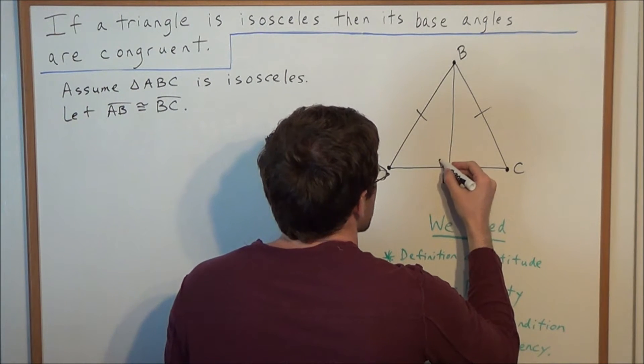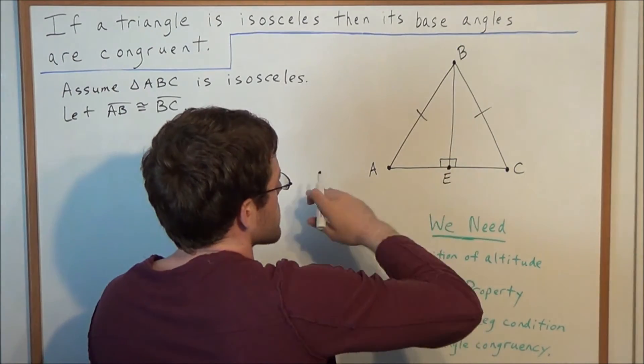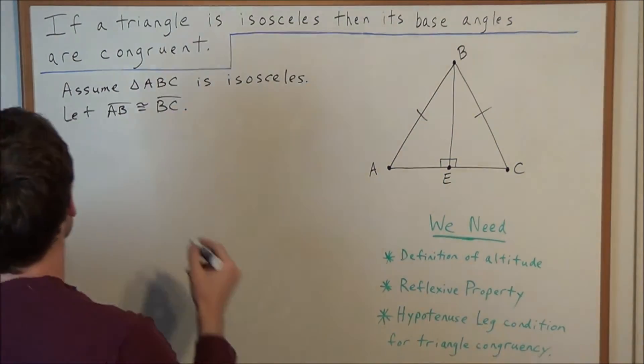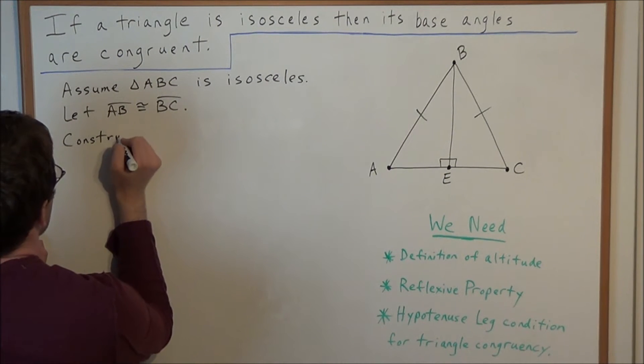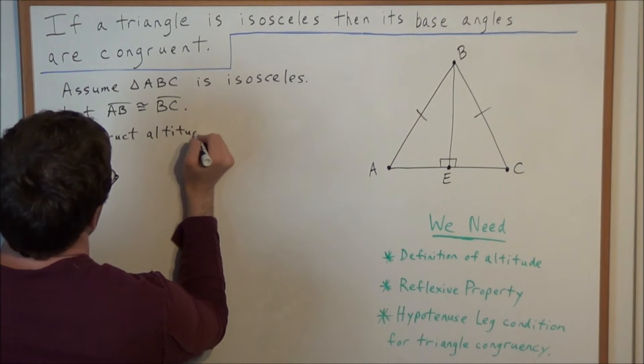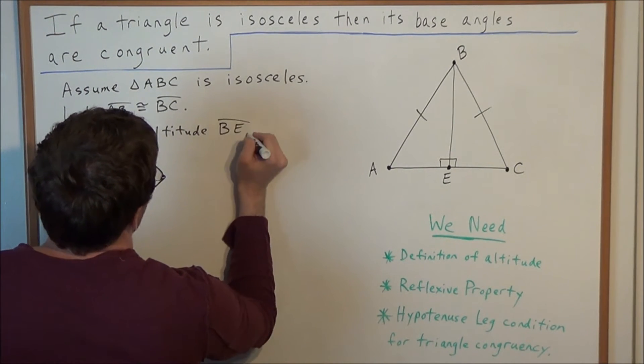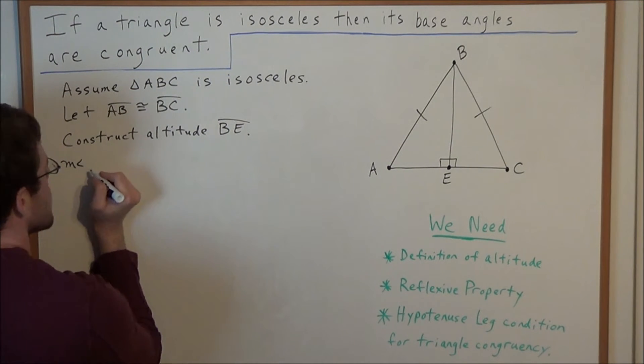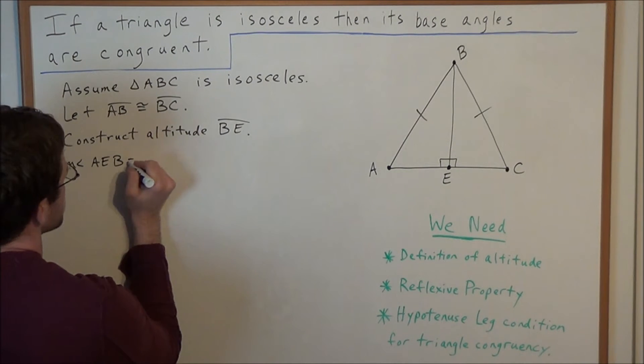And we know by definition that this is going to form 90 degree angles when BE intersects AC. So, now we can write construct altitude BE, and from here it follows that the measure of angle AEB equals 90 degrees,